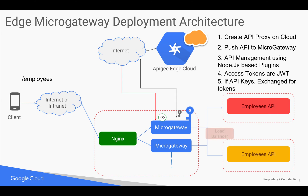Once you verify the JWT token, you call the back-end API. Generally, if there are more machines, you have a load balancer load-balancing to your back-end workloads. Whenever a response goes back through the micro gateway to the client, a lot of metrics are captured, and these metrics are pushed to the cloud so you can view the reports.